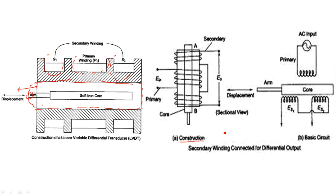In the second diagram, the construction is shown with the soft iron core and its arm — the same soft iron core, now drawn in a vertical fashion. Excitation is applied at the input of the primary winding, which is connected at the center and wound across the former, with leads taken outside where the input voltage is applied.